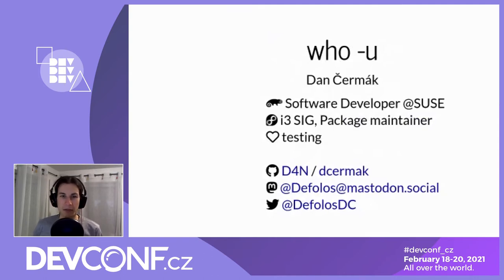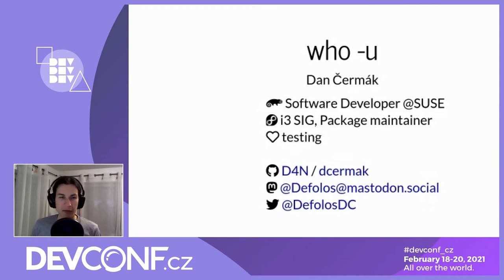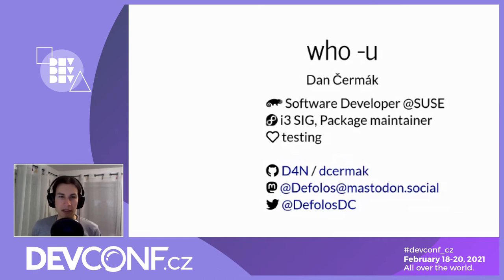Let's start with me - my name is Dan, I'm a software developer working at SUSE as part of the developer engagement program. My task is mostly to build tools for other developers. I'm also a package maintainer for some openSUSE packages, and I also maintain a bunch of packages in Fedora, where I'm a member of the i3 special interest group. We've created the new i3 spin for Fedora 34.